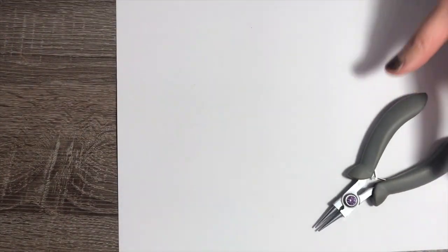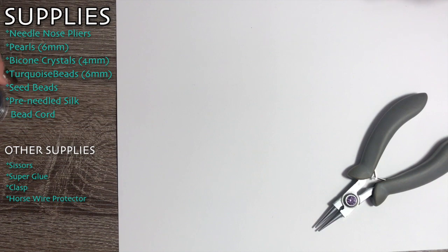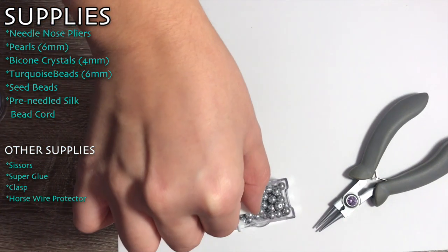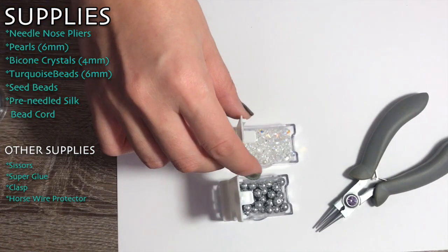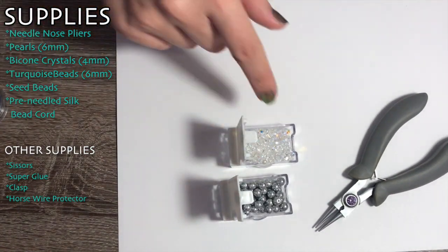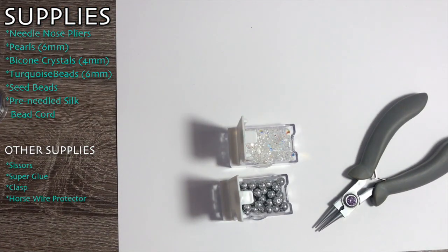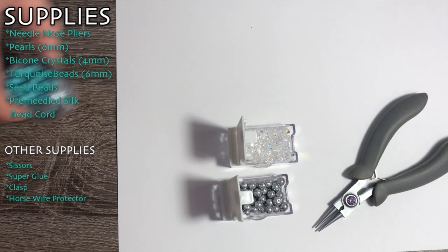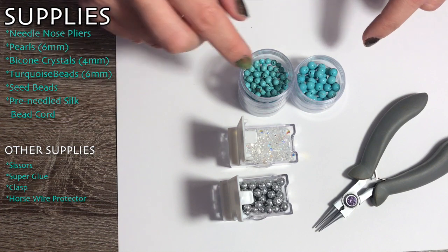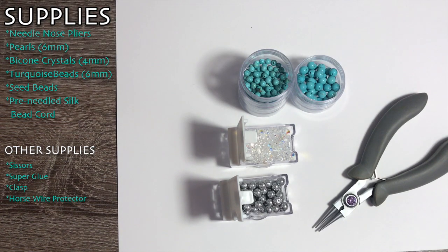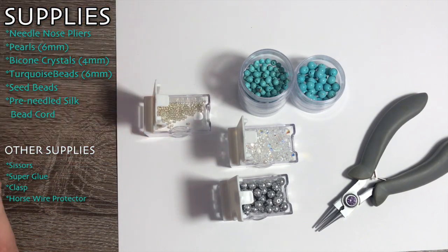Okay, what you're going to need are needle nose pliers like these, pearls—these are six millimeter glass pearls—crystals, these are Swarovski crystals in four millimeter, you can use six millimeter if you'd like, and I'm using some round beads, these are turquoise in six millimeter and four millimeter, and then some seed beads.